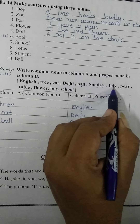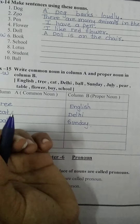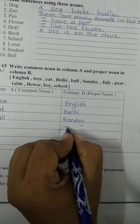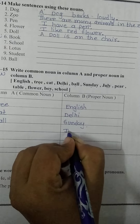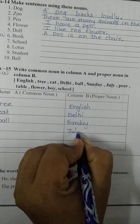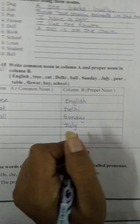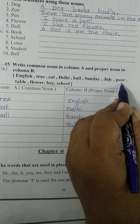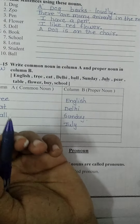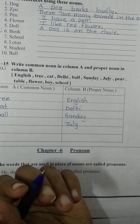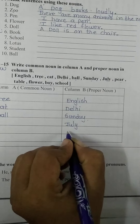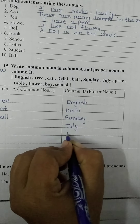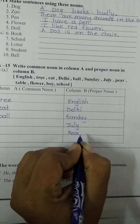July is a proper month, so it is a Proper Noun and we write it in Column B. J-U-L-Y, July. Pear is a type of fruit. We write it in Column B. P-E-A-R, Pear.